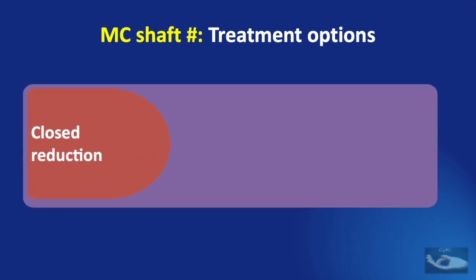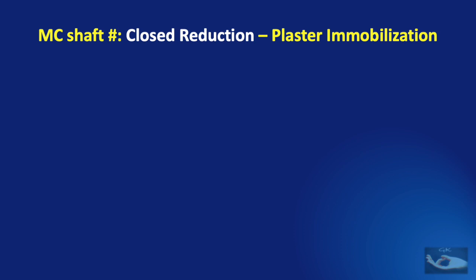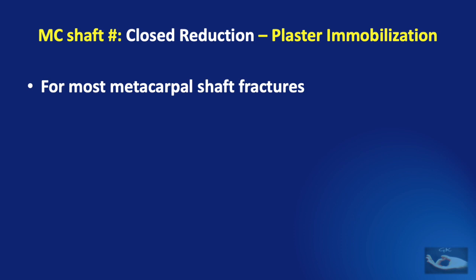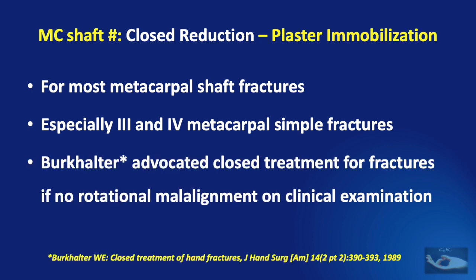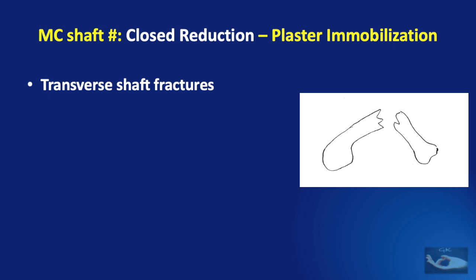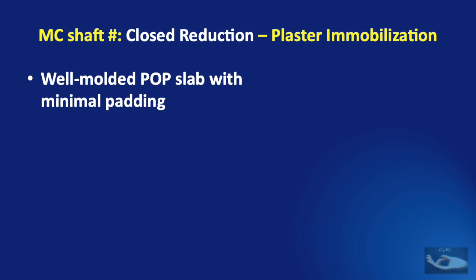The closed reduction methods can be followed up with POP immobilization, percutaneous pinning, or intramedullary fixation. Immobilization with either POP or thermoplastic material following closed reduction is the commonest method used, since it is applicable for most metacarpal shaft fractures — especially fractures of the third and fourth metacarpals, as they are supported on either side by the intact second and fifth metacarpals. Burkhalter advocated closed treatment for fractures if there was no rotational malalignment on clinical examination. The method of closed reduction consists of a palmarly directed force applied to the dorsal apex at the fracture site, with a dorsally directed force to the flexed metacarpophalangeal joint. The immobilization is done with a well-molded POP slab using minimal padding.